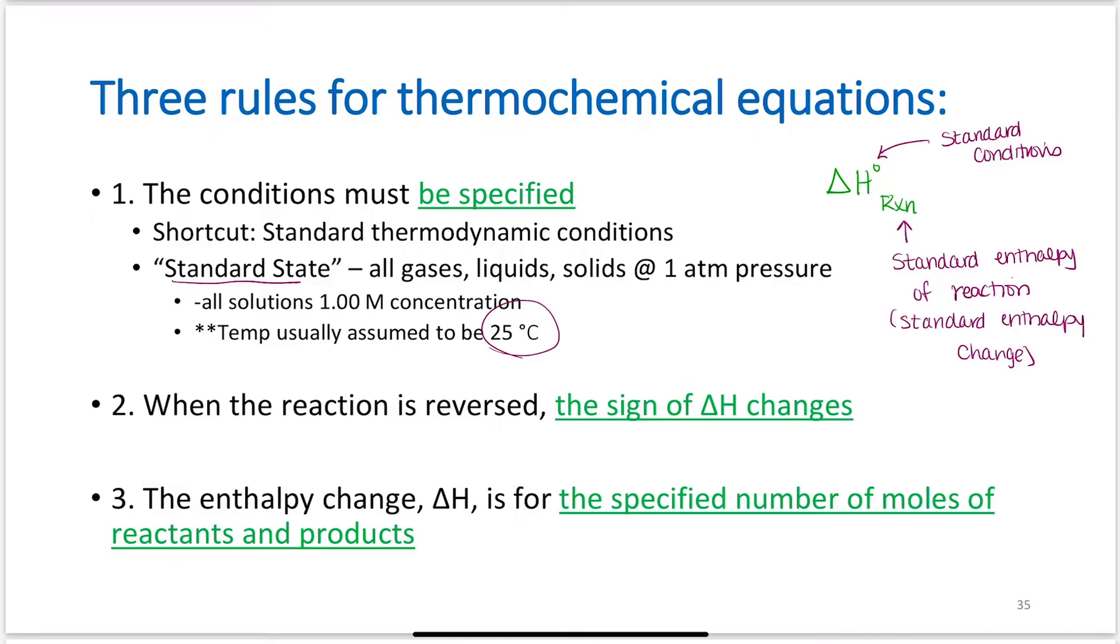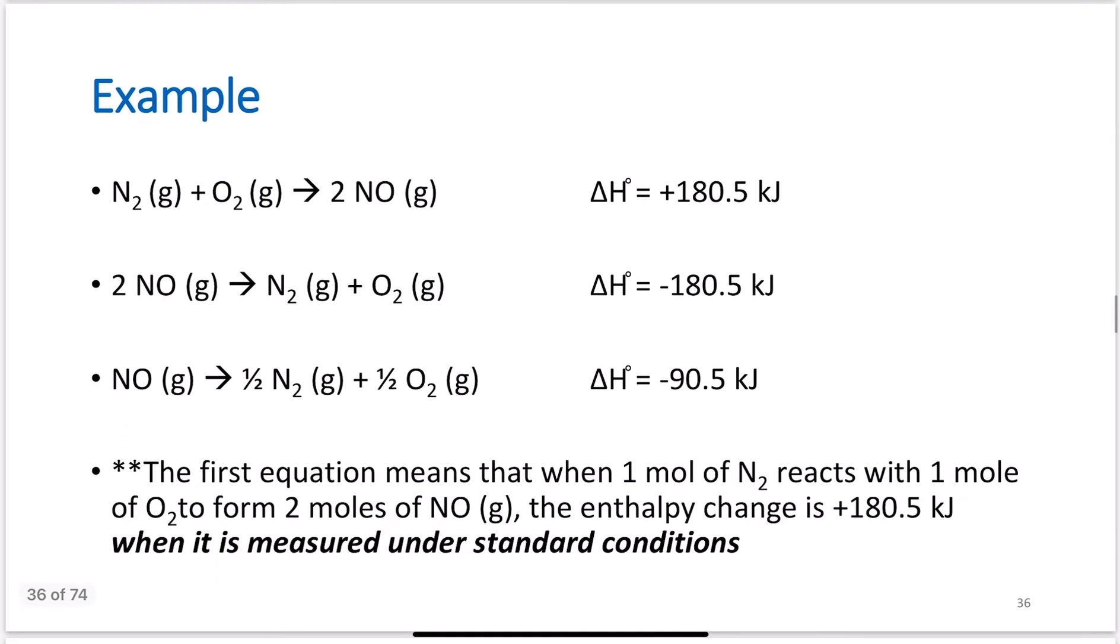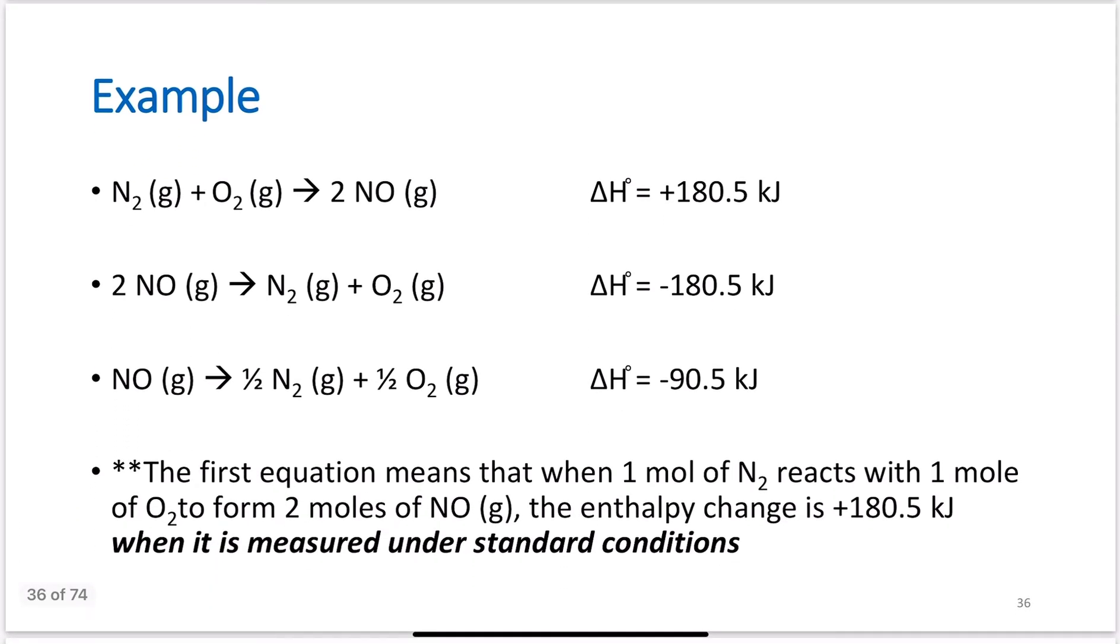The enthalpy change, delta H, is for the specified number of moles of reactants and products. So, just to illustrate what we mean, again, one mole of N2 reacting with one mole of O2 gives me two moles of NO, positive 180.5. I flip this reaction around. Now, two moles of NO is giving me one mole of N2 and one mole of O2, and I see that my sign has flipped as well. One mole of NO giving me a half a mole of N2 and a half a mole of O2.